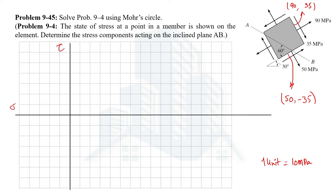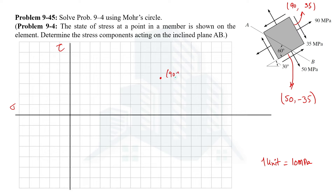For the first point: 90 is positive so we go rightward 9 units, and 35 is positive so we go upward to 3.5 units — this gives us point (90, 35). For the second point: 50 is positive so we go rightward 5 units, and 35 is negative so we go downward 3.5 units — giving us point (50, −35).